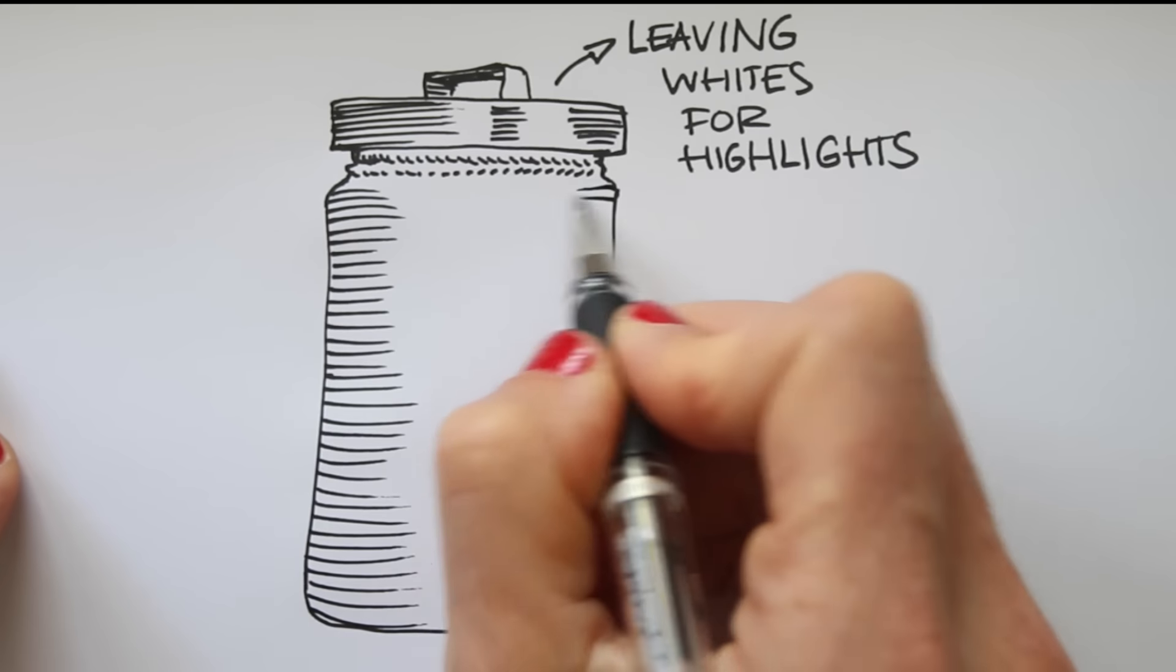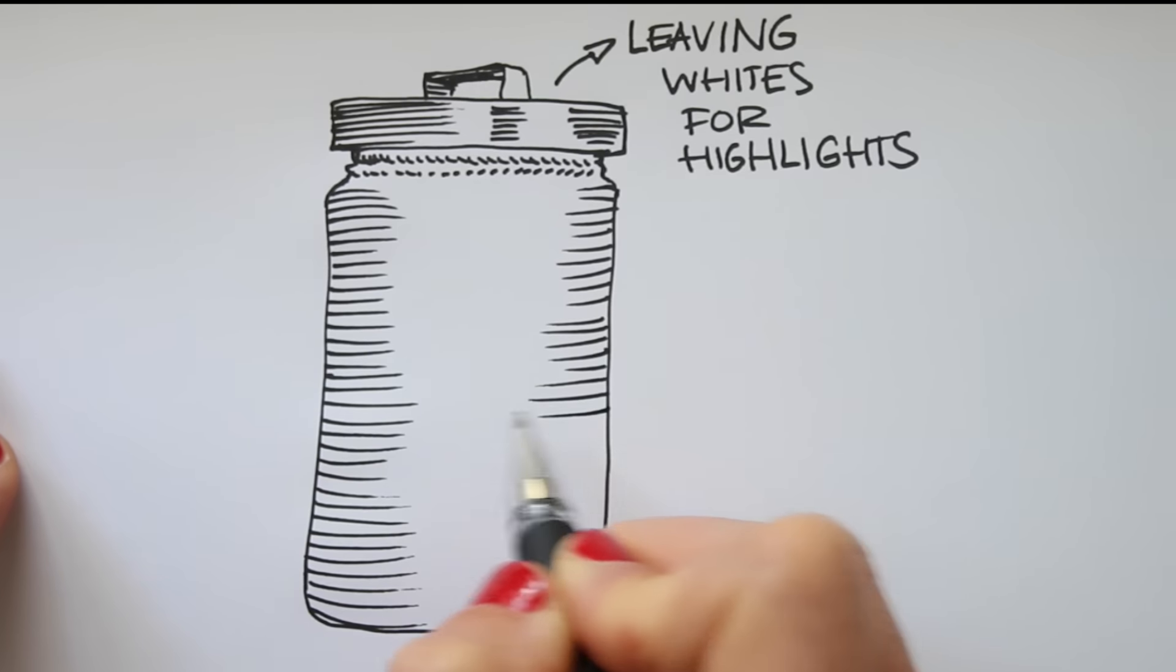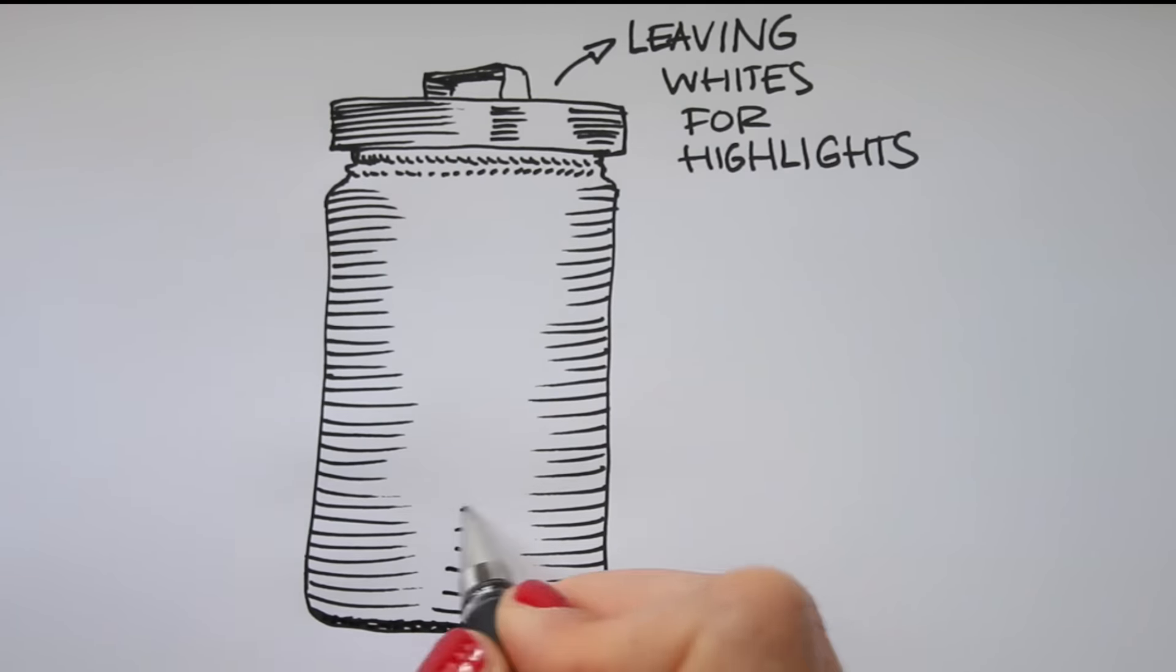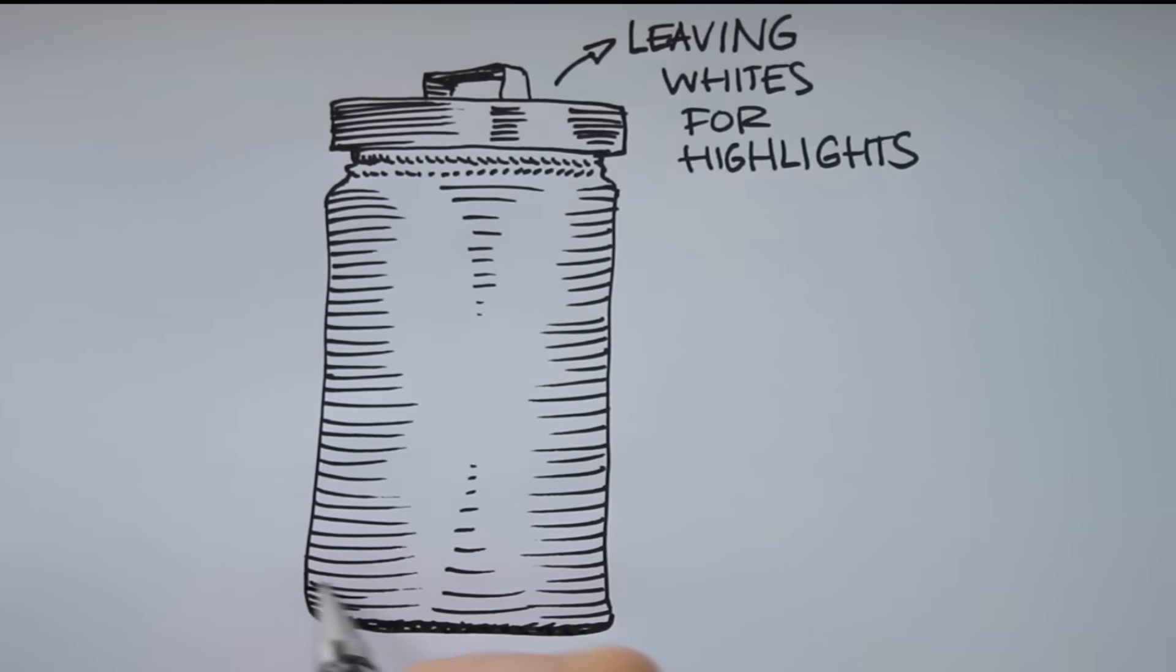See how I'm hatching along with the curve of the jar, like I showed you last week with a sphere, and the bottom of the jar is quite dark, so I crosshatch my lines to make that part darker.